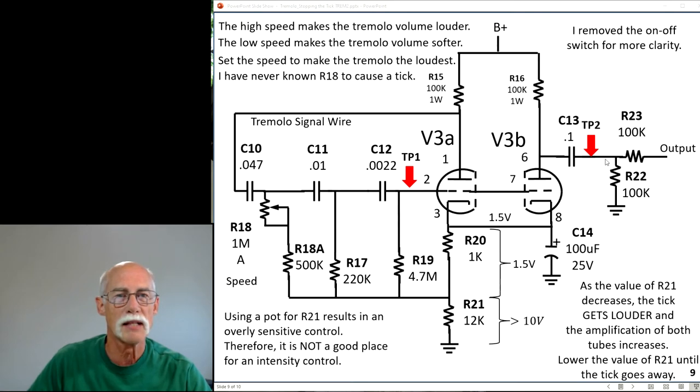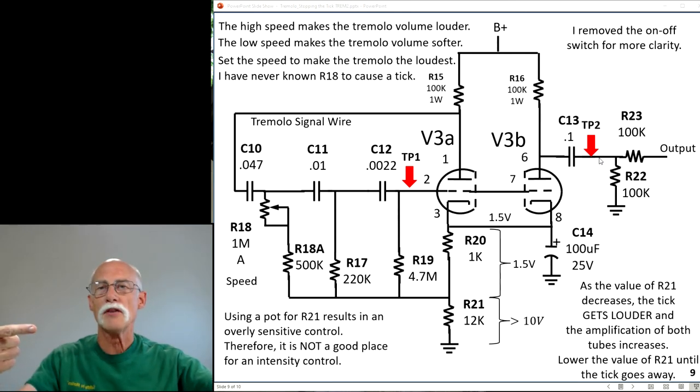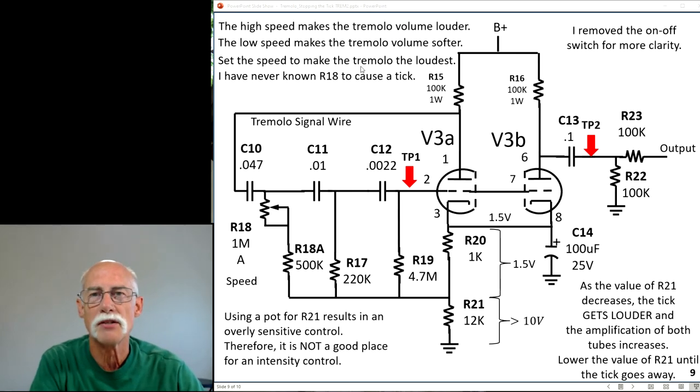The high speed makes the tremolo louder. The low speed makes the tremolo softer. As you increase the speed, they amplify more. If you turn the speed down, it gets softer. Set the speed to make the tremolo the loudest, and then we're going to adjust R21.